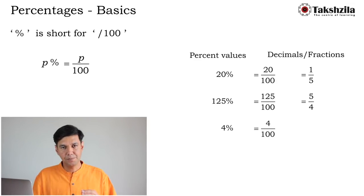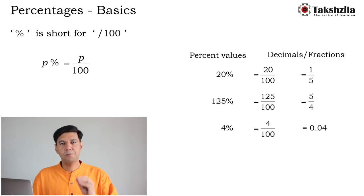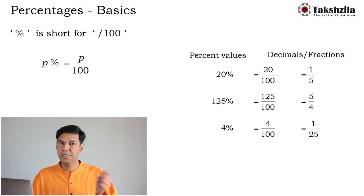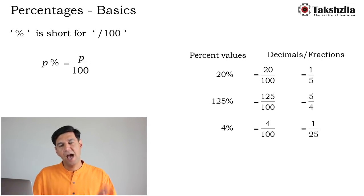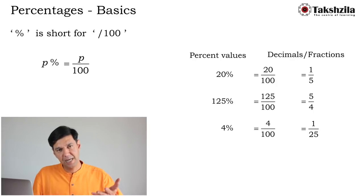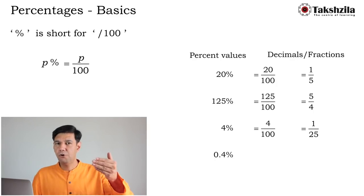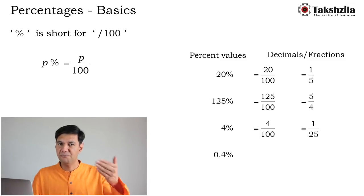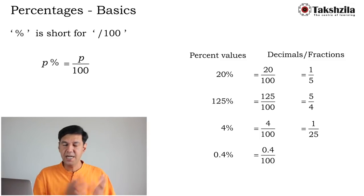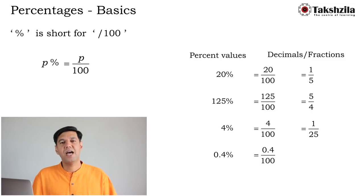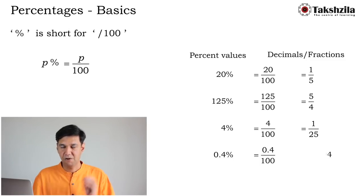4% is the number 4/100, which in decimals is 0.04. As a fraction, 4 cancels to give 1/25, so 4% = 1/25. Can a percentage be a decimal itself? Yes — 0.4% is 0.4/100, which gives 0.004 in decimal form, or 1/250 as a fraction.